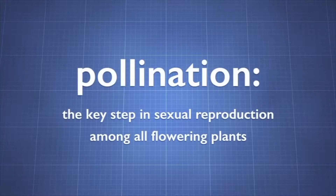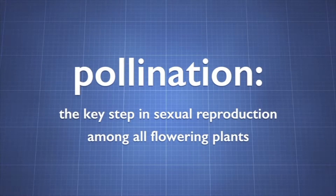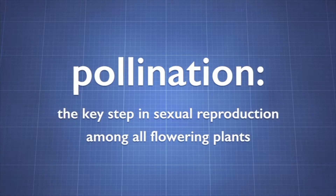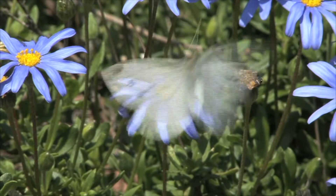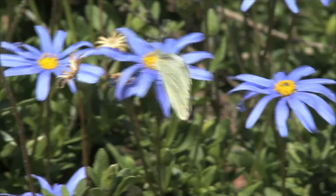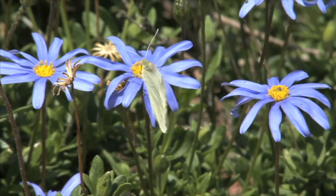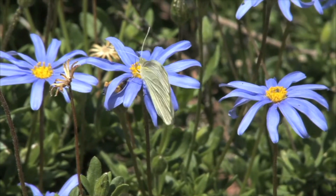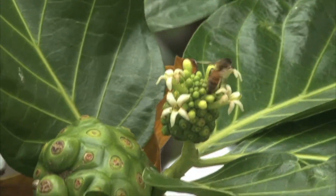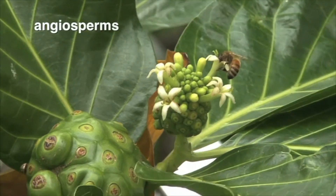Pollination is a key step in sexual reproduction among all flowering plants. The purpose of pollination is to allow individual plants to exchange genetic information. Flowering plants belong in the plant group of angiosperms.